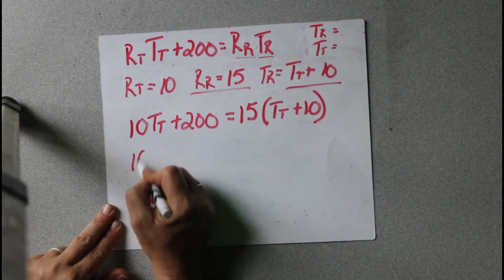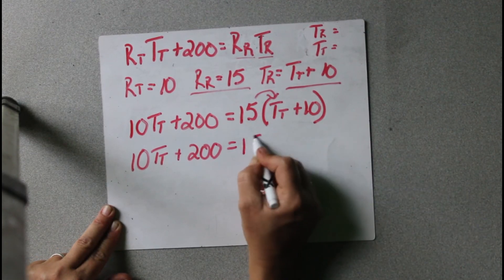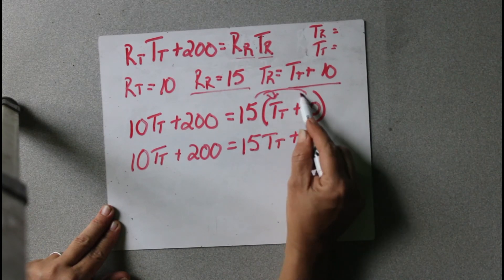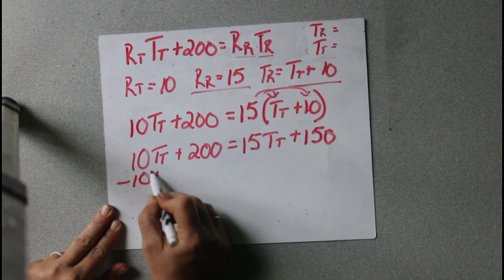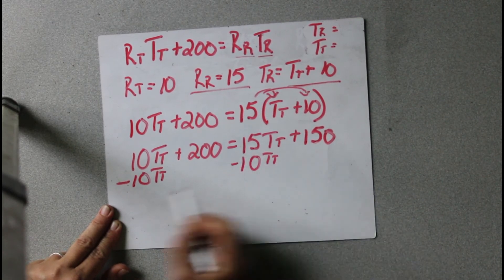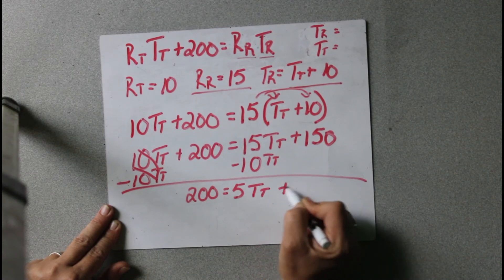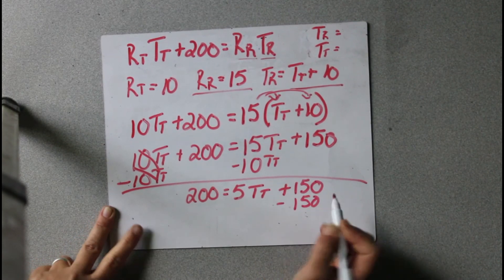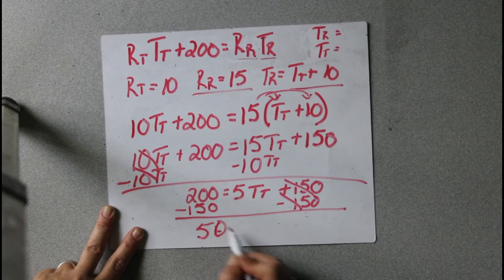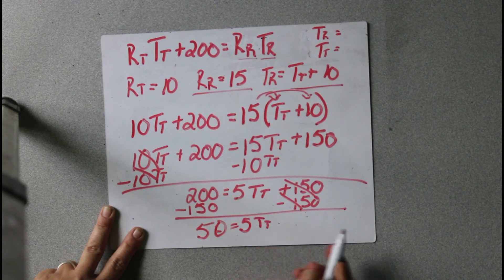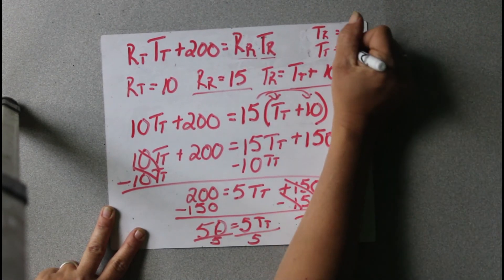Now we're just going to solve. 10TT plus 200 equals — now we have to distribute — 15TT plus 15 times 10 is 150. Now we've got to get our variables together on the same side. Minus 10TT and minus 10TT: we get 200 equals 5TT plus 150. Subtract 150, and we get 50 equals 5TT. Then we divide by 5, and TT equals 10. So TT equals 10.